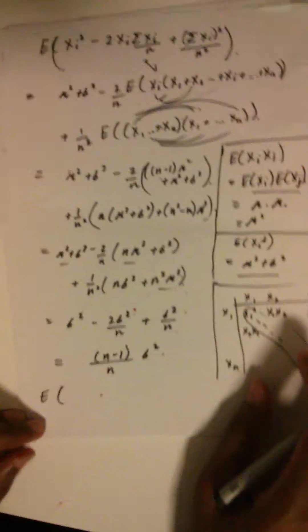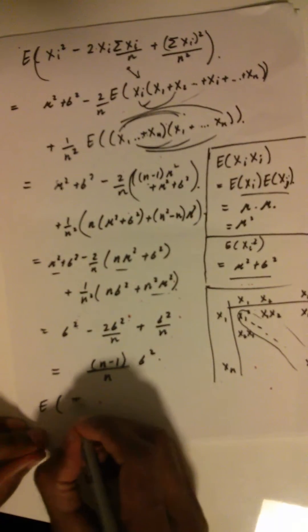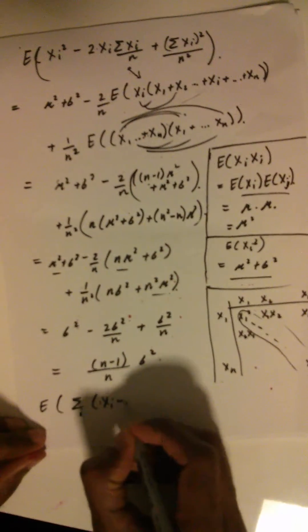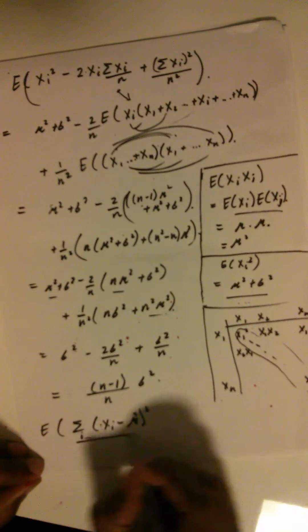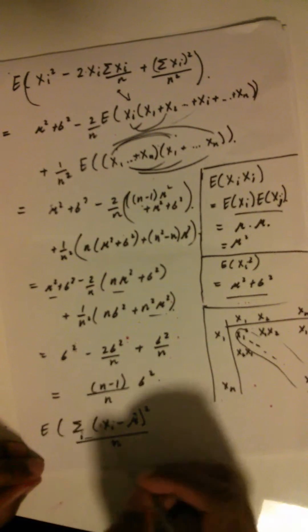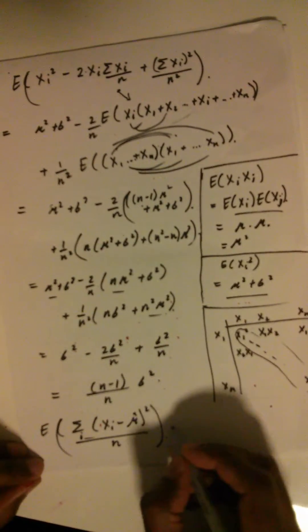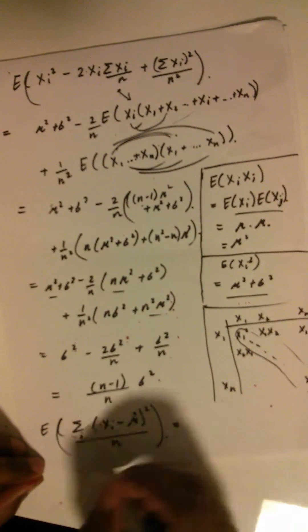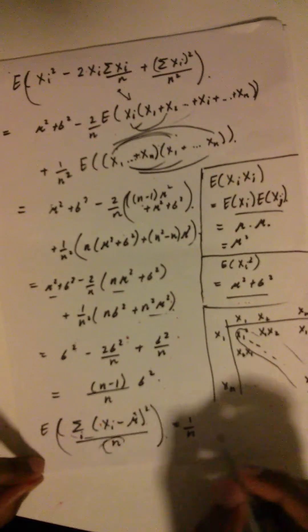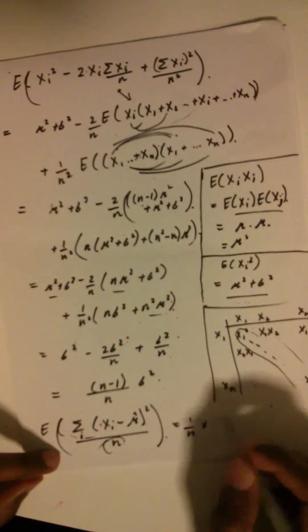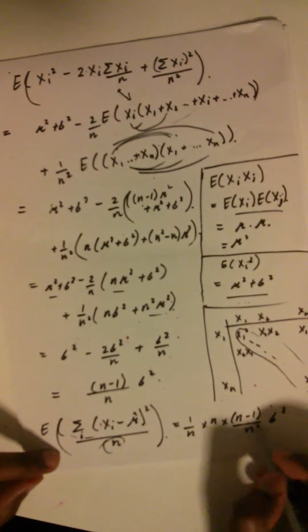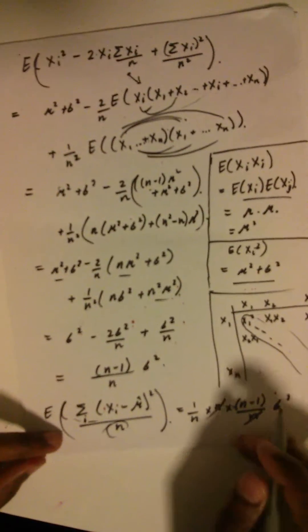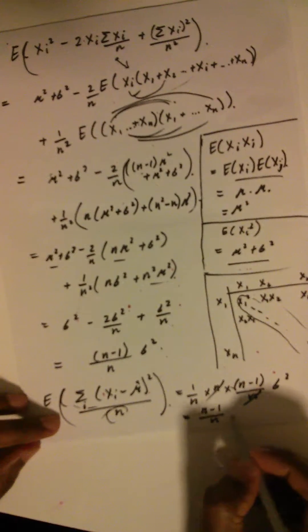To finish up: the full expectation of (1/n)·Σ(xi − μ̂)² — remembering the sum over n terms — gives n times our per-term result, divided by n, which simplifies to (n−1)/n · σ².